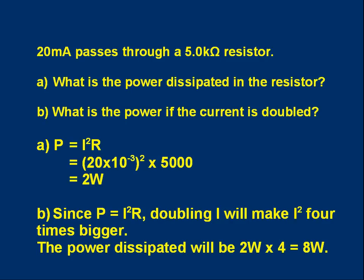The second part is the effect of doubling the current. Well, you could repeat the calculation using 40 times ten to the minus three. But there's a quicker way. Since power equals I squared R, and we're assuming R is a fixed value, 5 kilo-ohms, doubling I will make I squared four times bigger. If you double the number, its squared value gets four times bigger. For example, 5 squared is 25. If you double 5, it's 10. 10 squared is 100, four times bigger than 25. Doubling I will make I squared four times bigger, and the power will therefore be four times bigger. It will be 2 watts times 4. Eight watts.